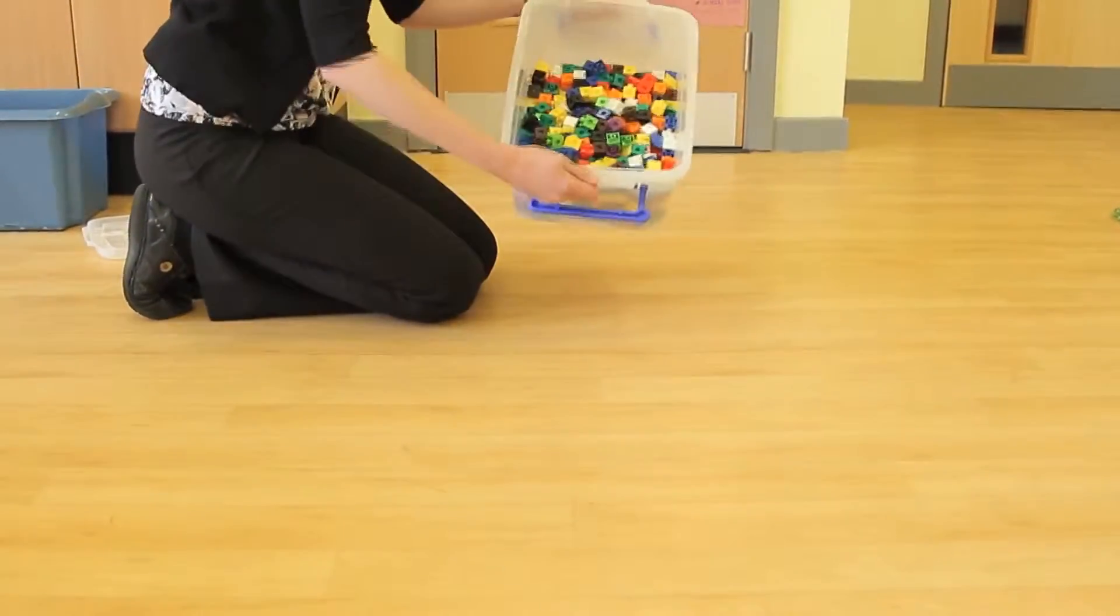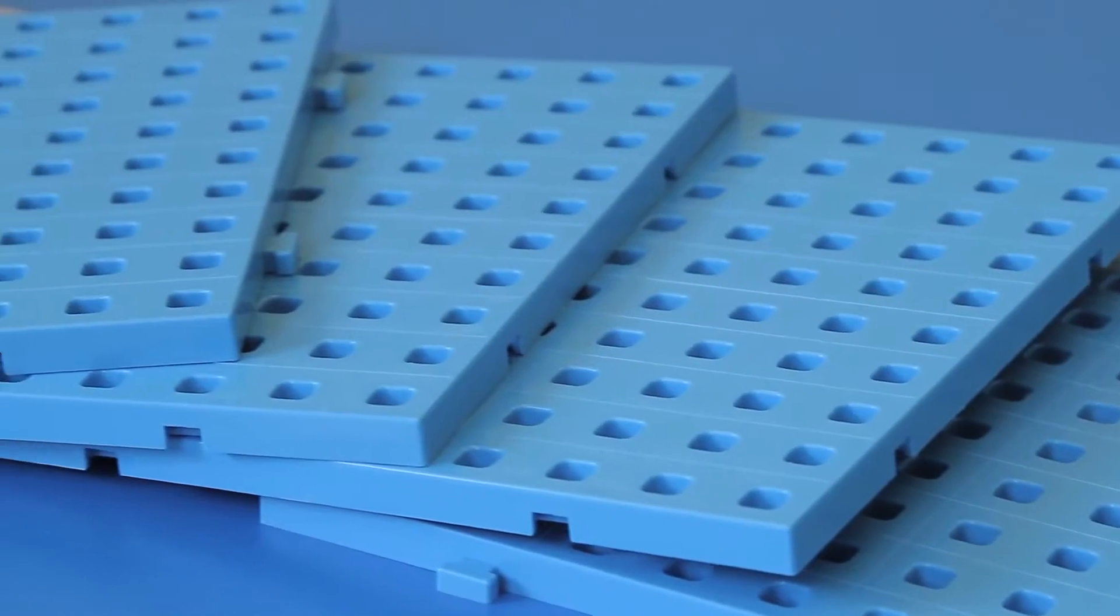Linking Cubes come as a massive set of 500 pieces in 10 bright colors. The set also contains 4 baseboards.